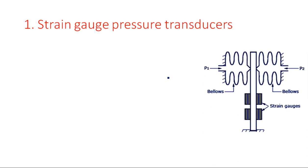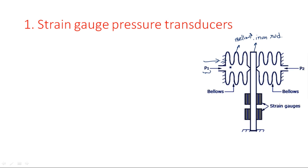Let us start with the first one: strain gauge pressure measurement. This is the structure showing how pressure can be measured. See here, this is an iron rod placed between two bellows. These are the bellows, which have the feature that when we apply some pressure they have the flexibility to compress or to transmit pressure on the device. Consider that we are applying two types of pressures, P1 and P2. When we apply pressure P1 in the right-hand direction, this bellow will have influence on the iron rod.